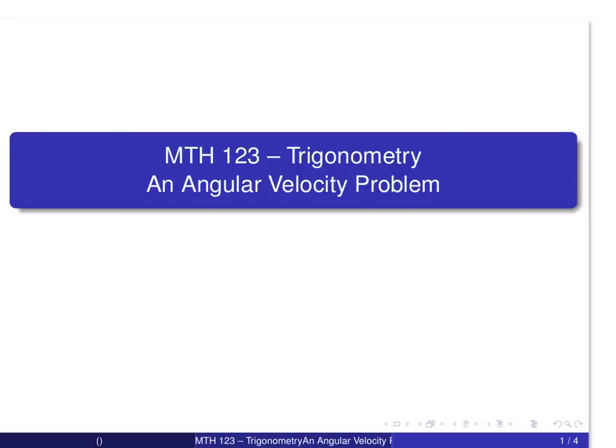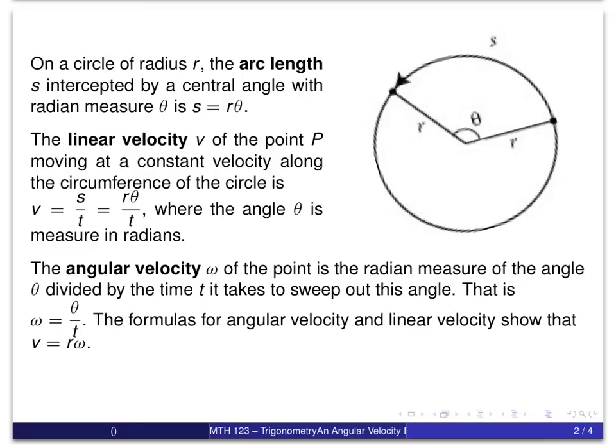For this problem, there are some things with which you should be familiar before we start. The diagram in the upper right shows the arc length, designated by s, on the circumference of a circle of radius r. The angle theta is the central angle that intercepts that arc, and these are related by the formula s equals r theta.